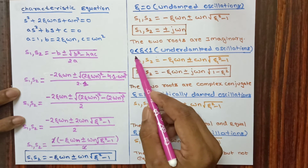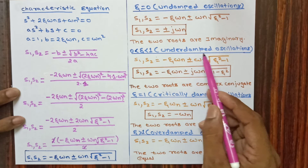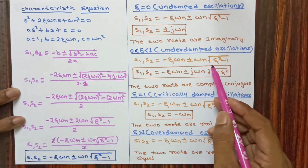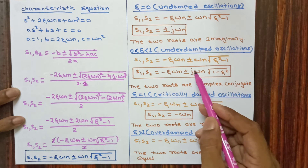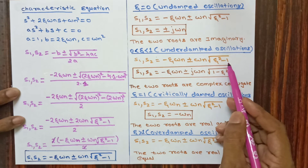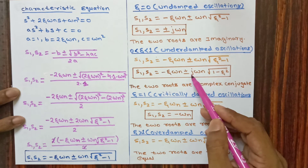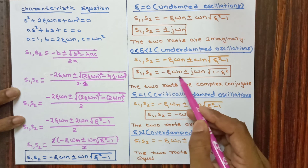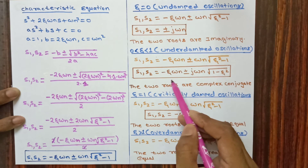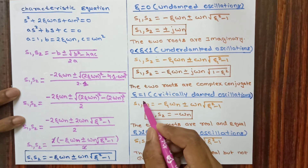For 0 < zeta < 1 (underdamped oscillations), s1, s2 = -zeta*omega_n ± omega_n * sqrt(zeta^2 - 1). Since zeta < 1, (zeta^2 - 1) is negative, so we take out -1 as j, giving s1, s2 = -zeta*omega_n ± j*omega_n * sqrt(1 - zeta^2). The two roots are complex conjugates.